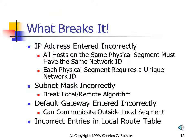What breaks ARP? If IP addresses are entered incorrectly, that will break it, because all hosts on the same physical segment must have the same network ID and each physical segment requires a unique network ID. If two hosts are on the same physical segment but configured with different network IDs, one computer will appear remote when it is really local, and communication will fail. Also, if the subnet masks are entered incorrectly, it will break the local and remote algorithm — computers that are really local will appear remote, or computers that are really remote will appear local.